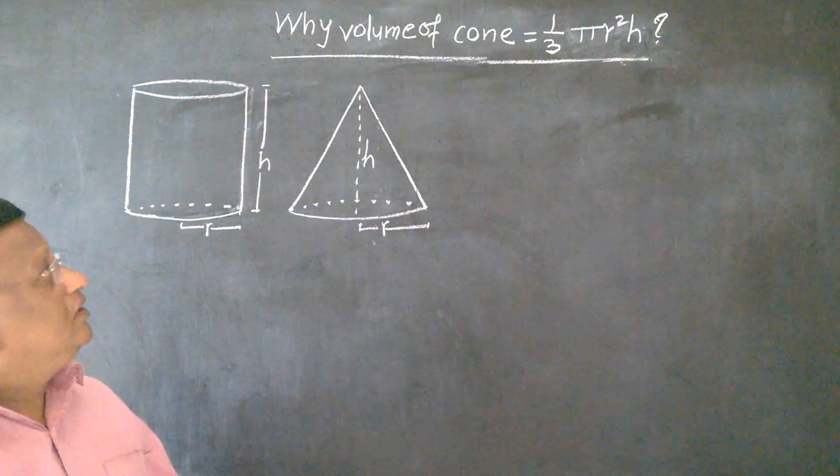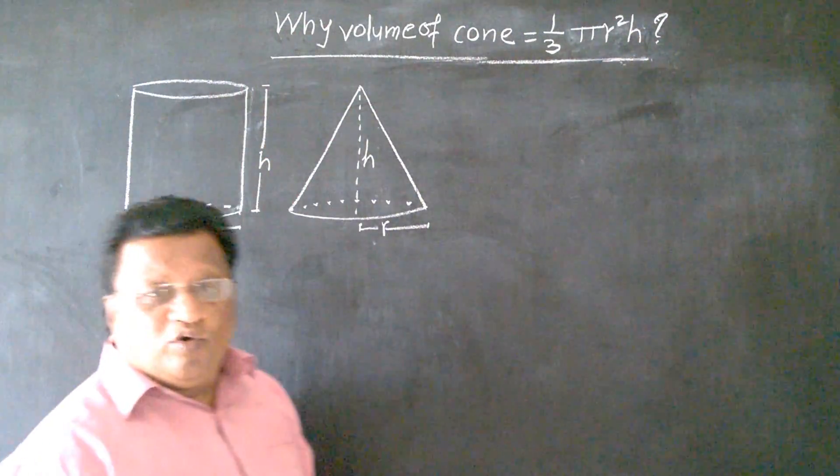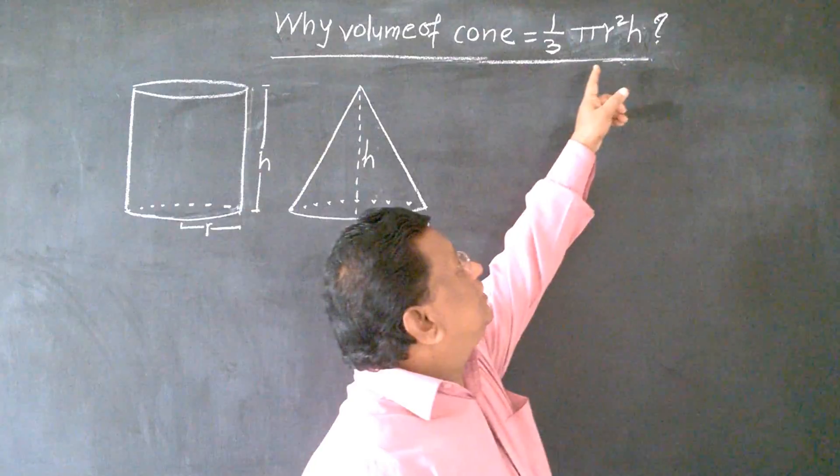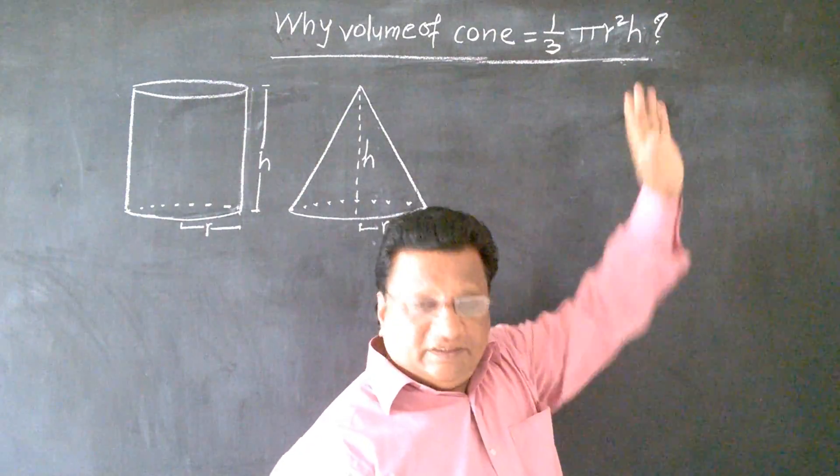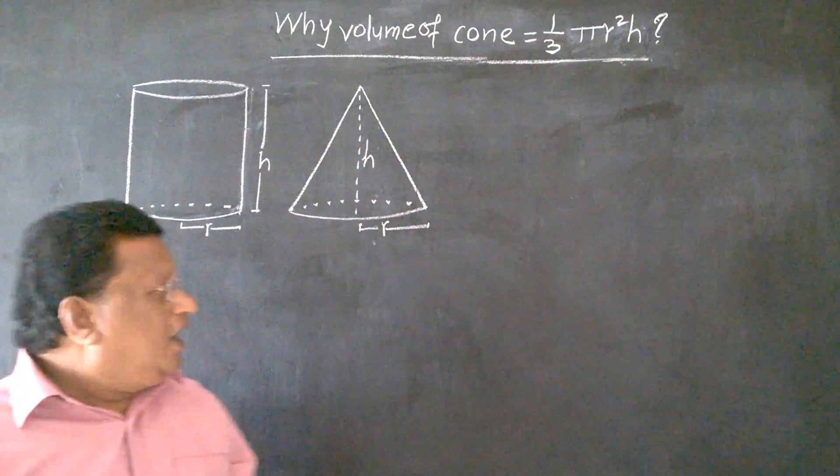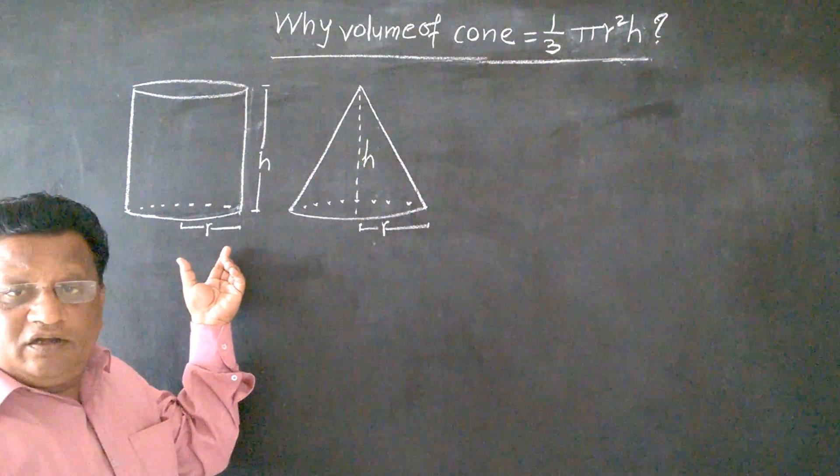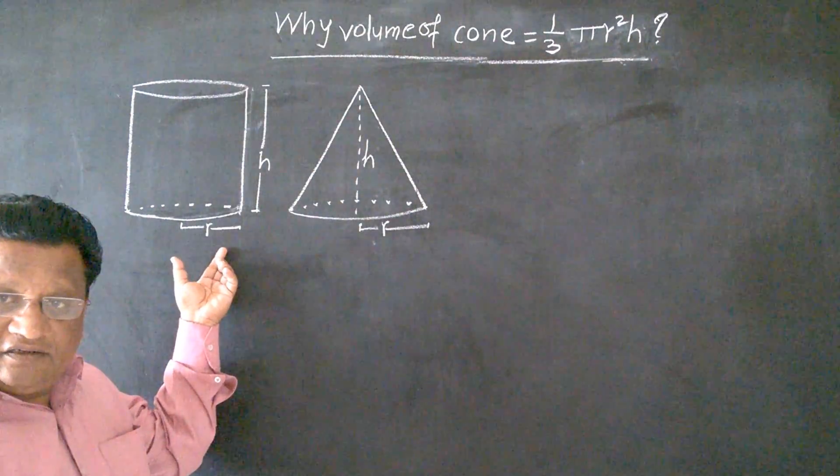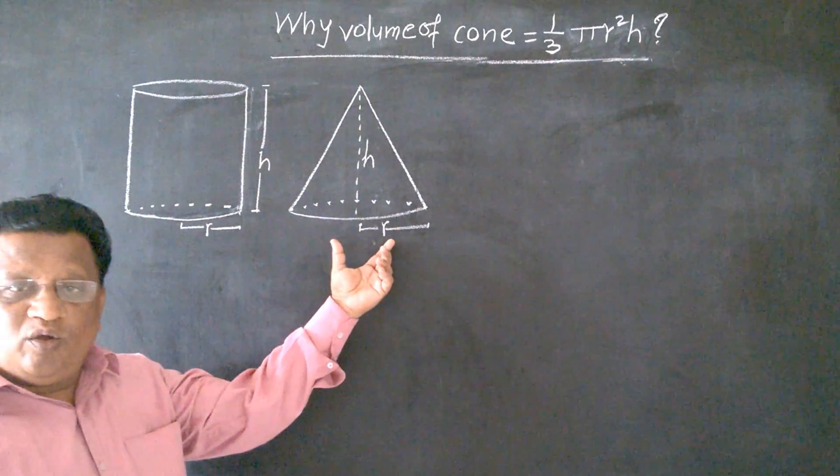Dear friends, why volume of cone is equal to 1 upon 3 pi r square h? For that, here I have drawn a cylinder and a cone.